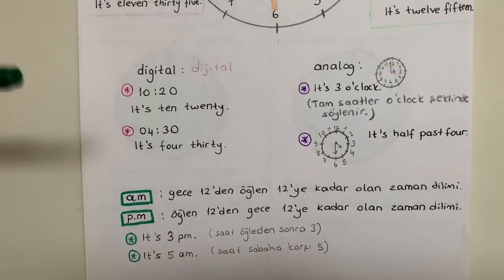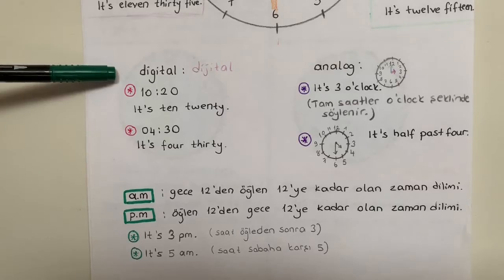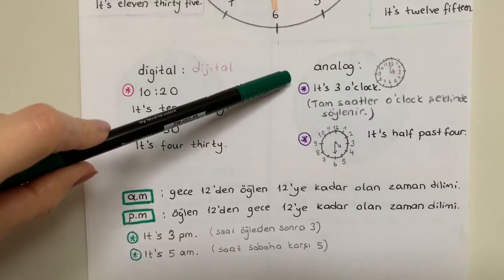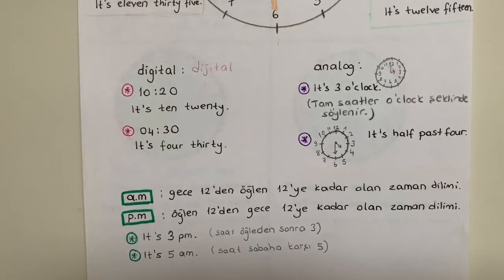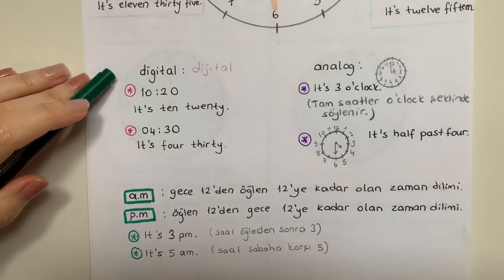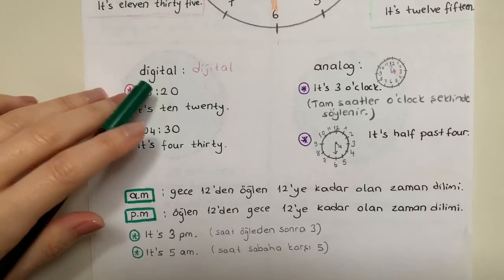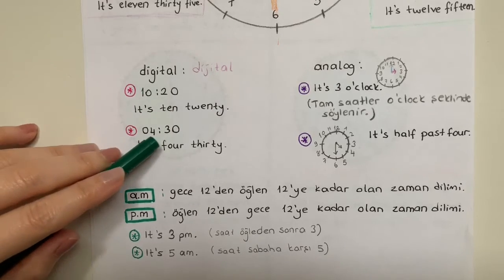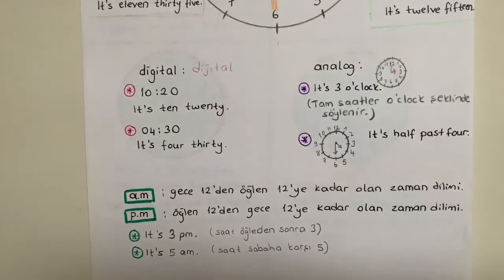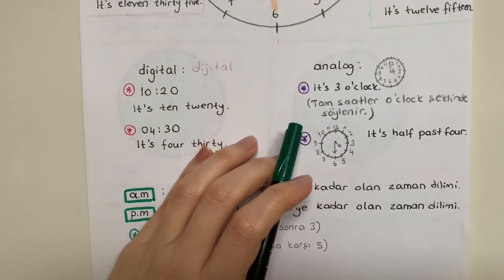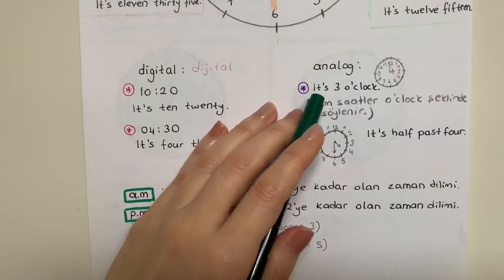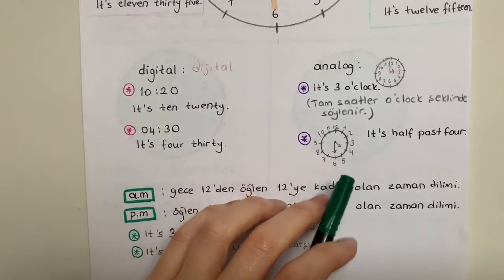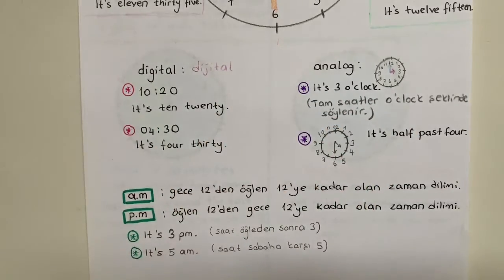Like I said before, we have digital version or analog version. So if I want you to read like digital time, you can say just the numbers: it's ten twenty, or it's four thirty. But if I want you to say it like analog, you need to say it's three o'clock, or here, this is the time